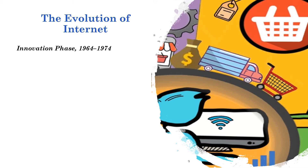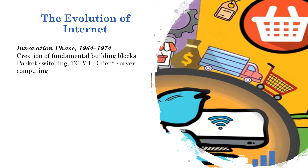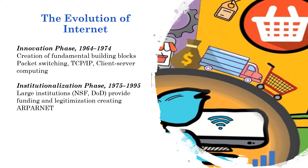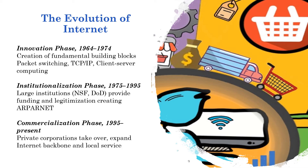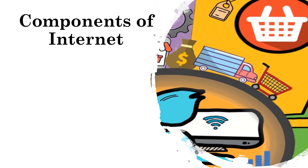The evolution of the internet. The innovations phase, which is 1964 to 1974, involved the creation of the fundamental building blocks: packet switching, TCP/IP, and client-server computing. The institutionalization phase from 1975 to 1995 saw large institutions provide funding and legitimization, creating the ARPANET. The commercialization phase, which is 1995 onwards, had private corporations take over and expand the internet backbone and the local components of the internet.